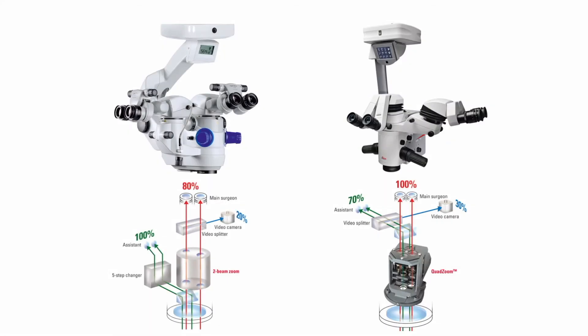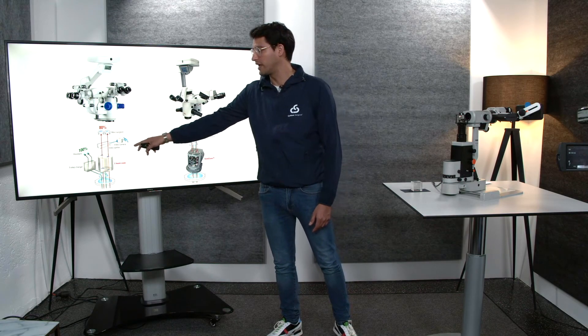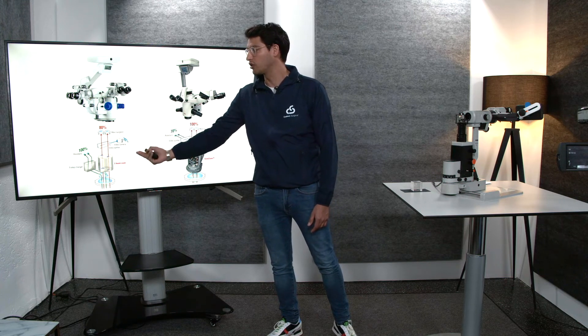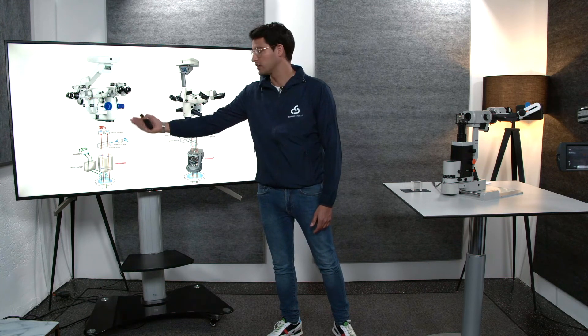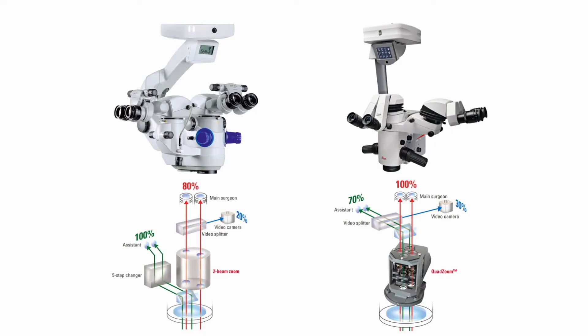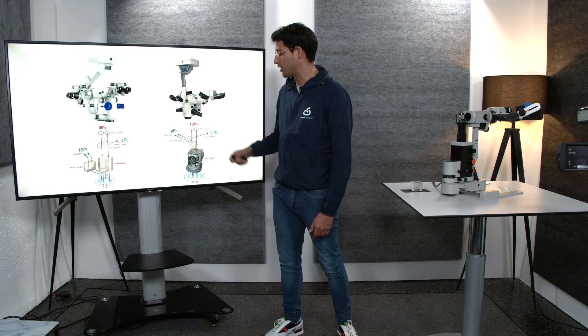These are examples of medical grade microscopes using beam splitters. For example, over here you can see a microscope that is redirecting 20% of the light going to the main surgeon's oculars towards the video camera. And over here you can see another example: on this microscope, 30% of the light going to the assistant binoculars is redirected to the camera.